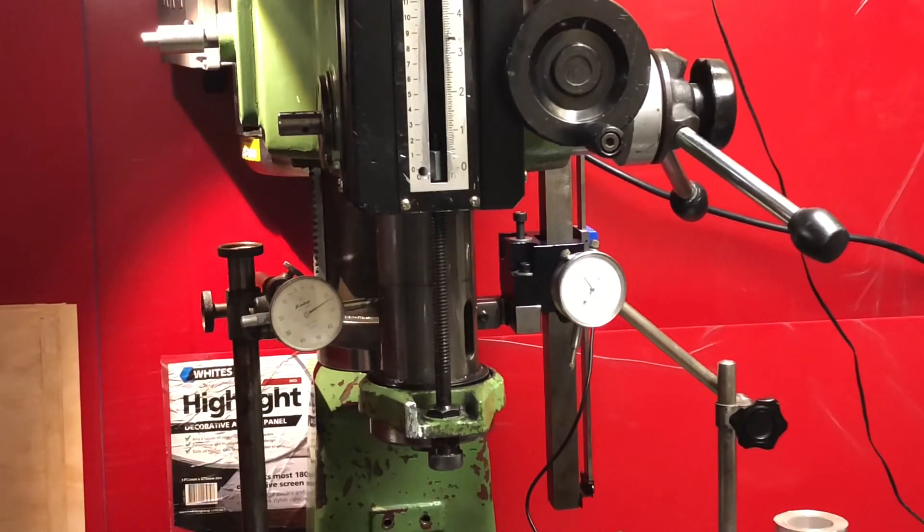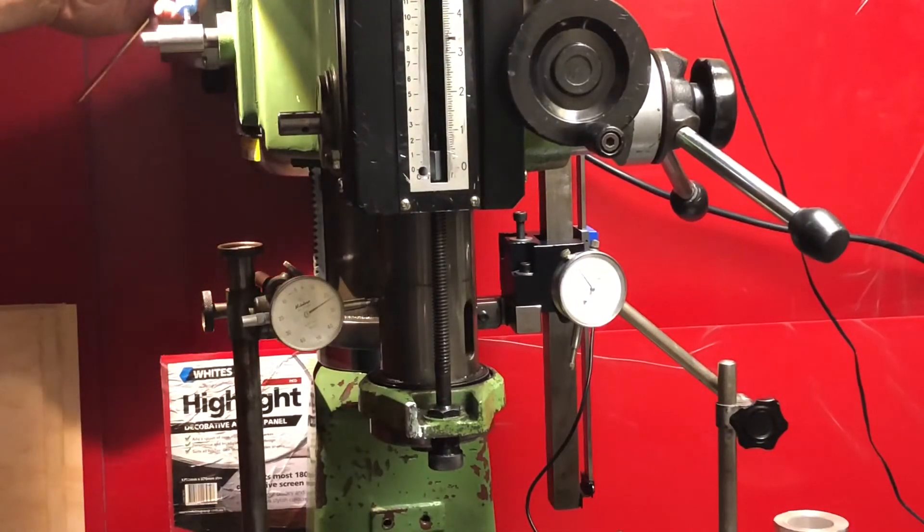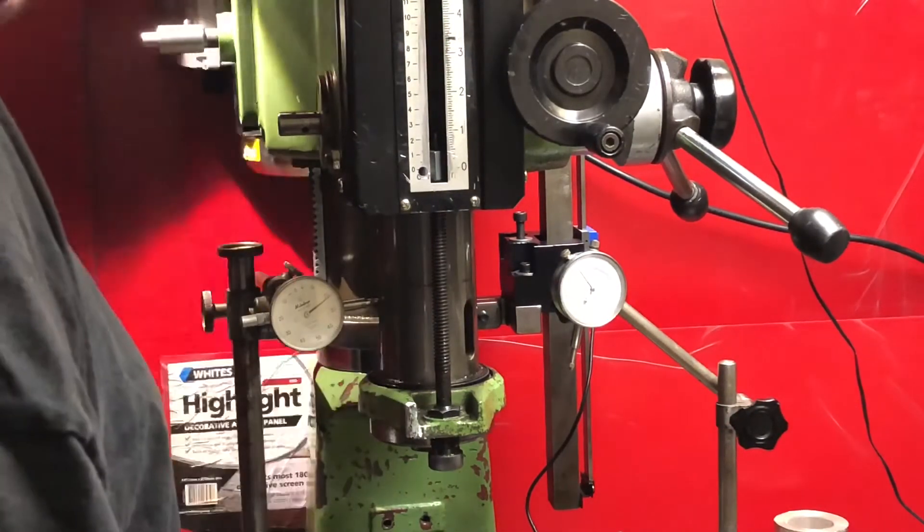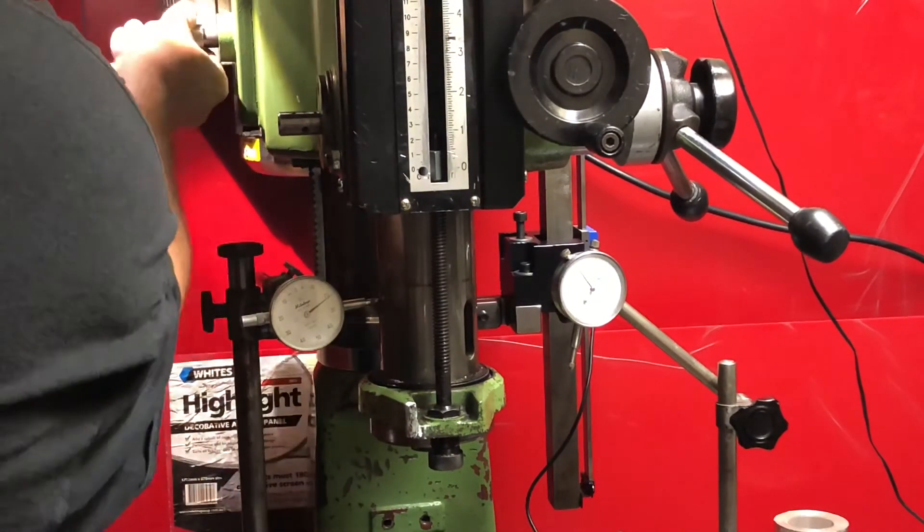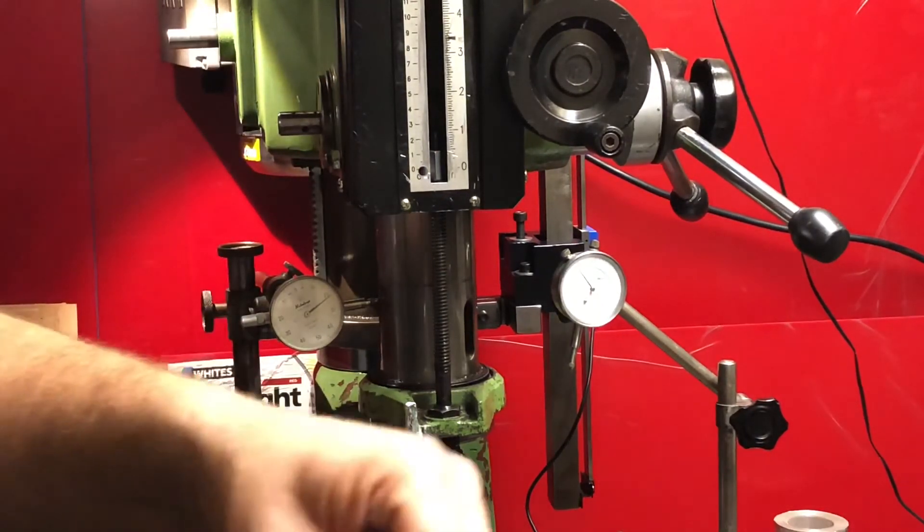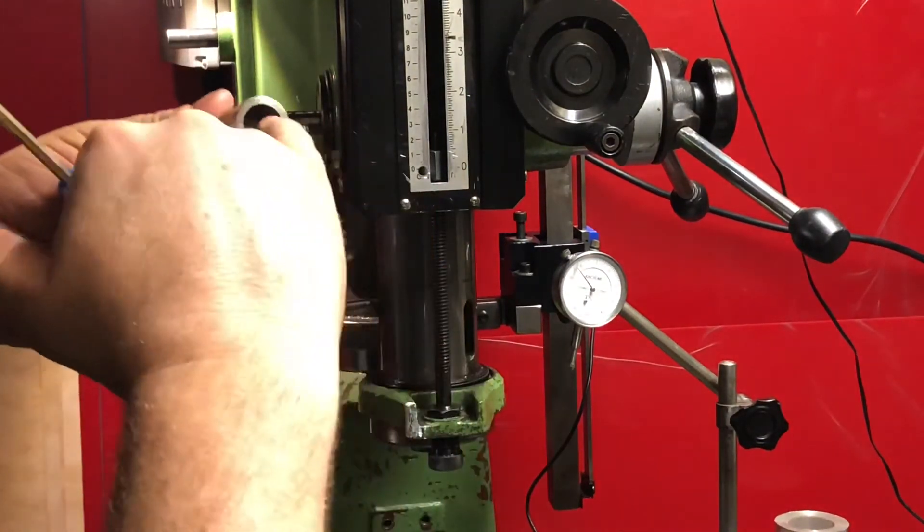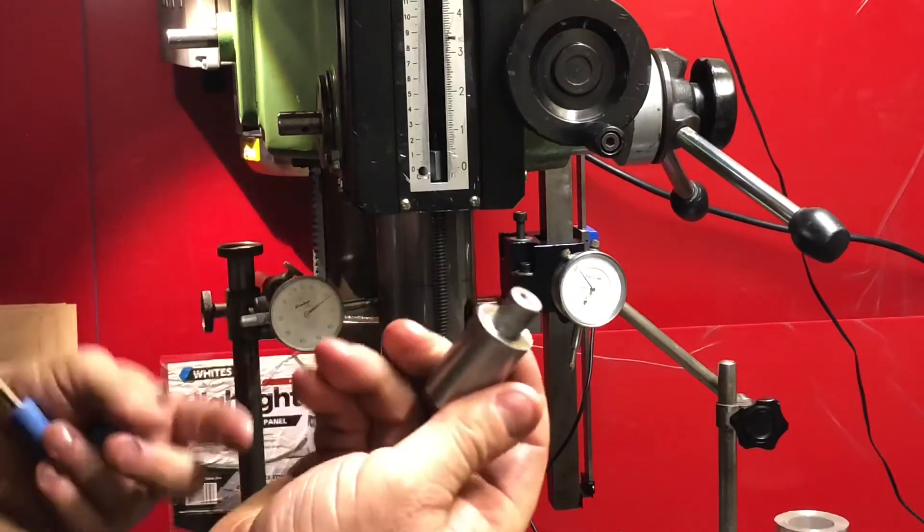For those of you who want to see a closer look at what I've made, here it is - really just a very simple extension collar with a hole, shaft with a neat fit to the inside, grub screw, and then a reduced size here to fit onto the 13mm of the drill chuck.